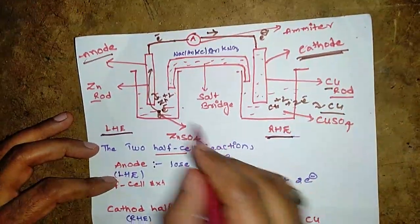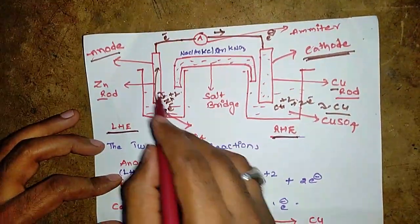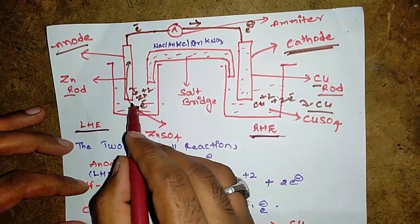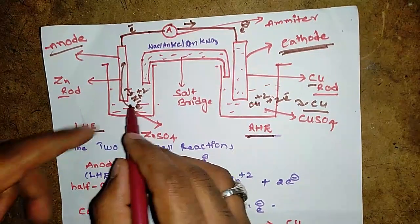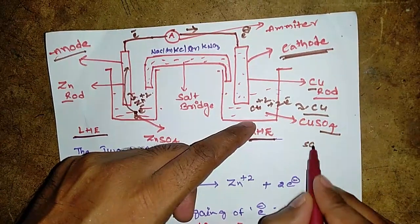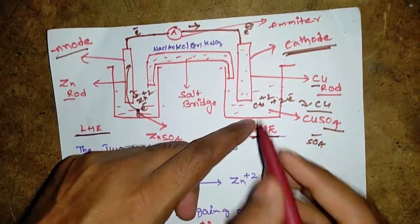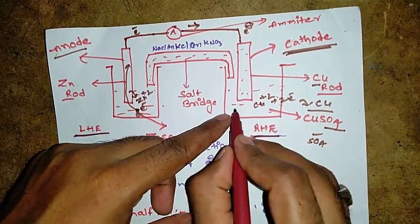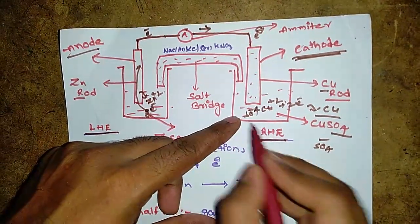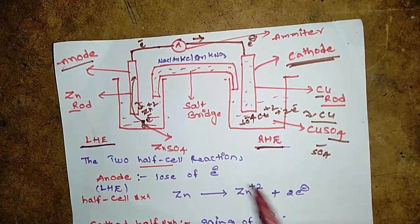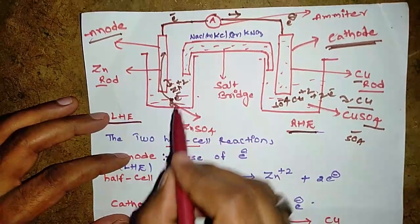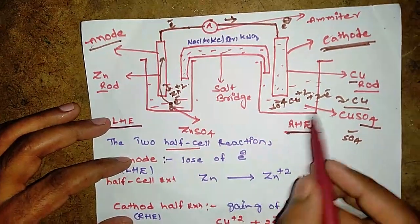Copper is deposited on the surface of the copper rod. The zinc rod loses electrons and Zn²⁺ ions build up in excess in the zinc sulfate solution. The Zn²⁺ ions increase in the ZnSO₄ solution, and SO₄²⁻ ions also increase in the copper sulfate side.